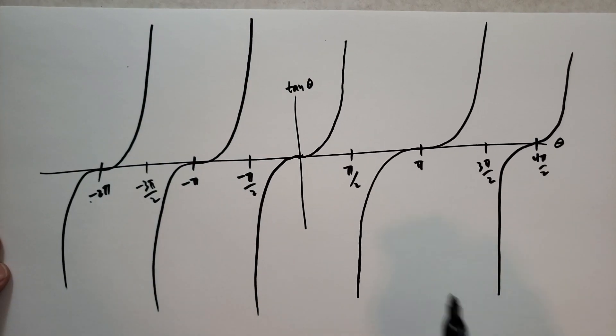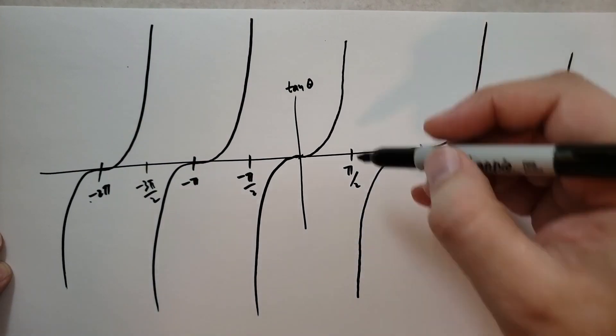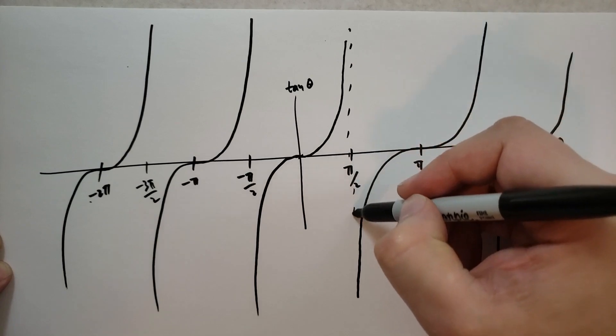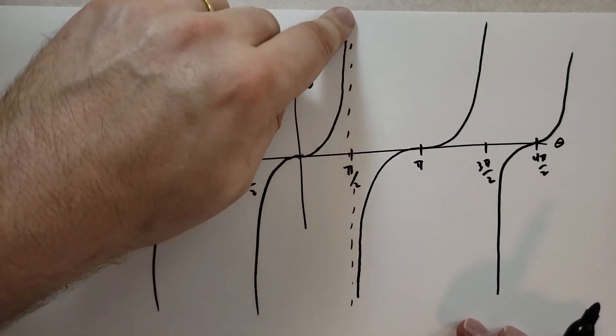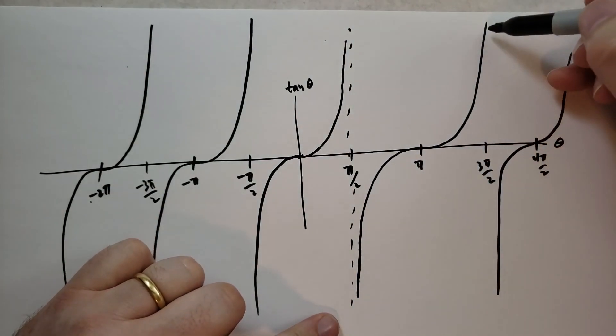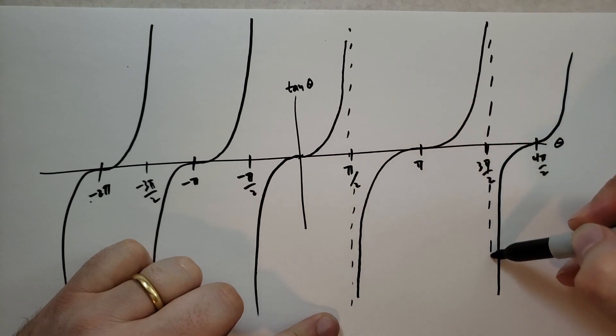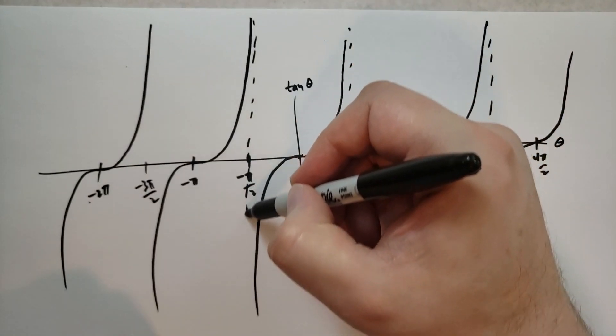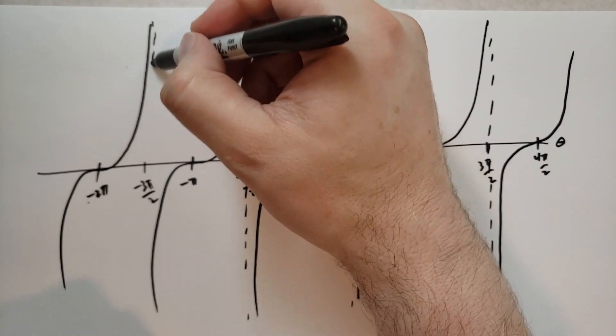That's why you can see that at these particular values, it's undefined. So at π over 2, it's either positive infinity or negative infinity. You can't tell which. Same thing for 3π over 2, and minus π over 2, and minus 3π over 2.